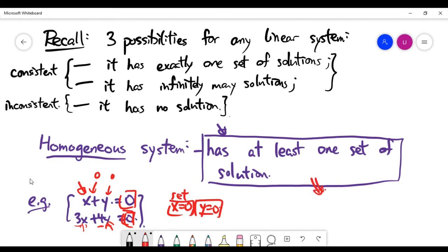Based on my claim that any system which is homogeneous must have at least one set of solutions, it means we can simply set all variables to be zero.